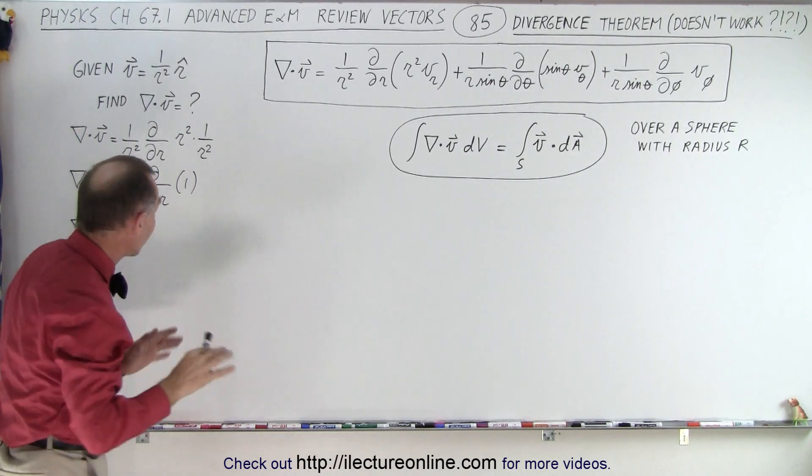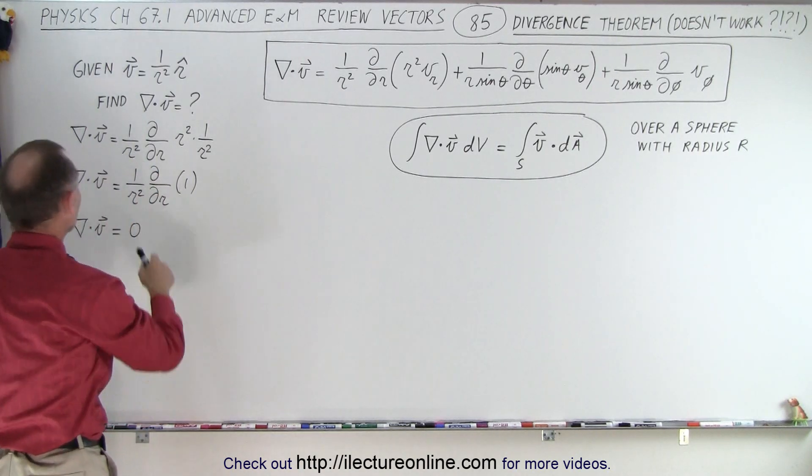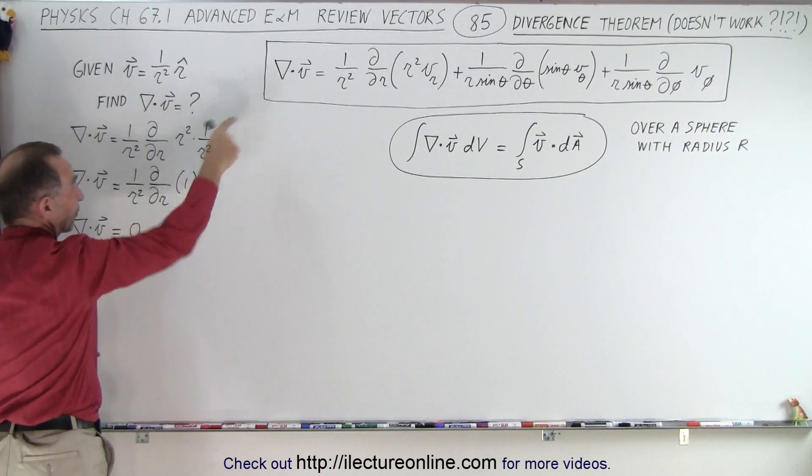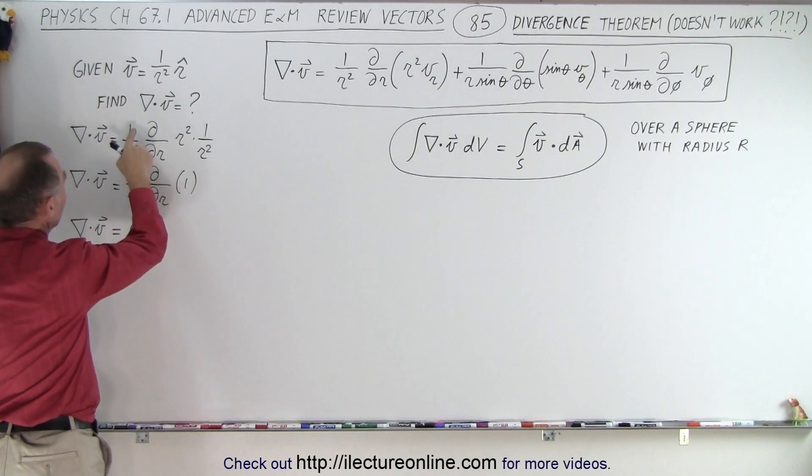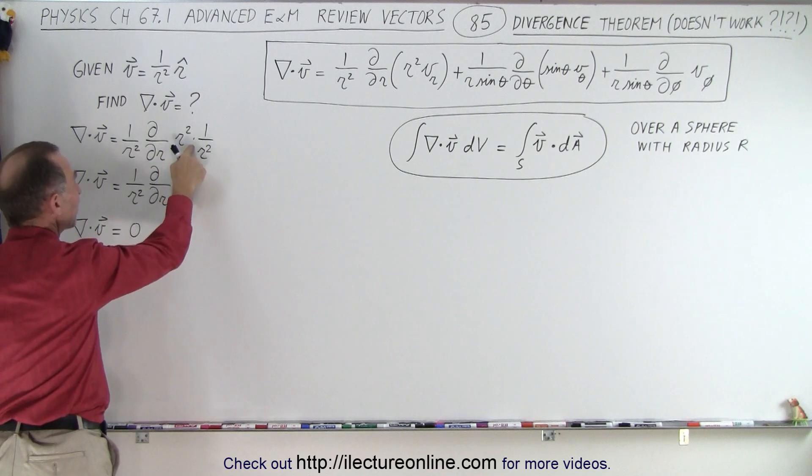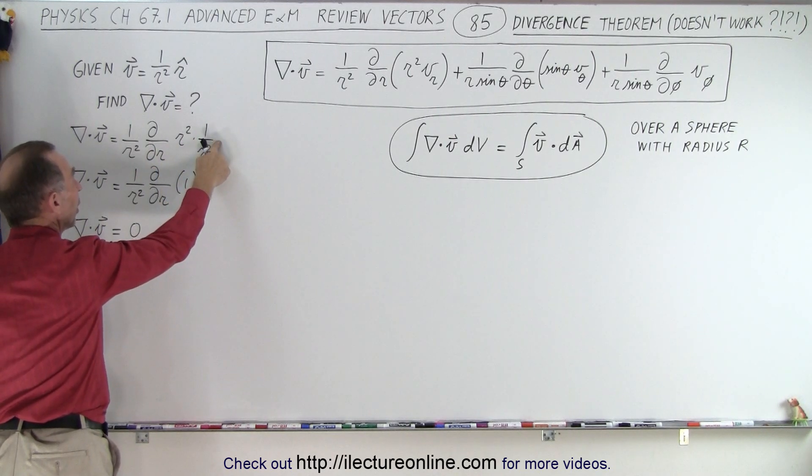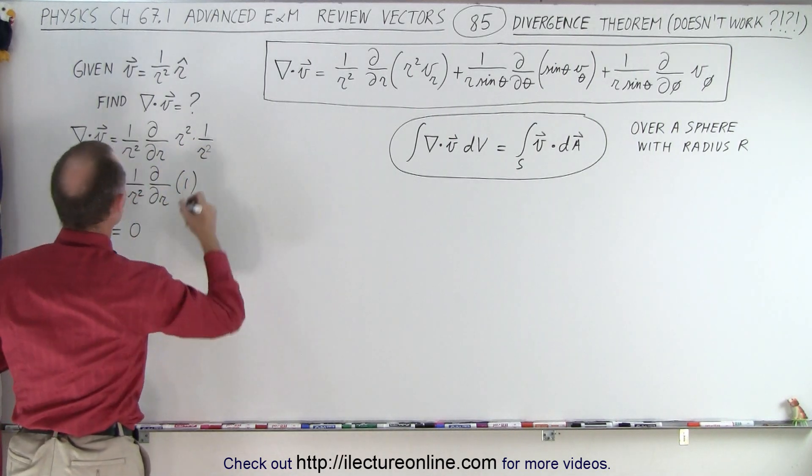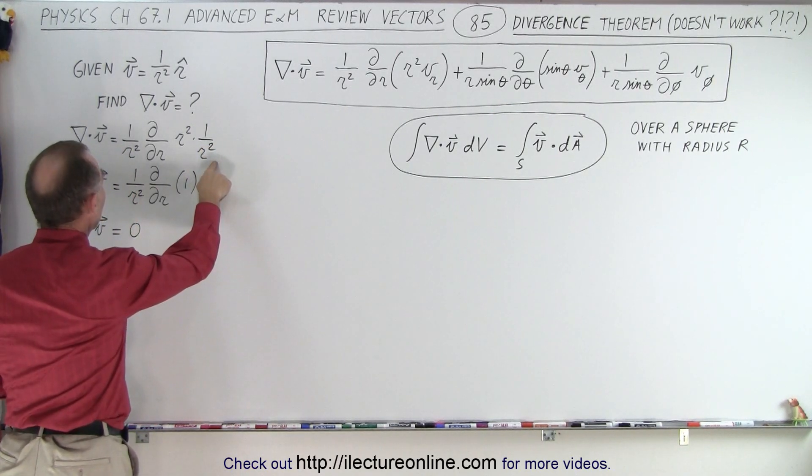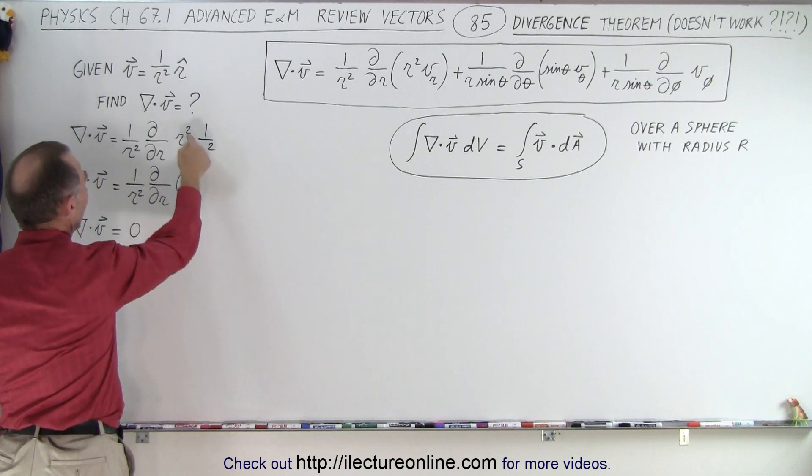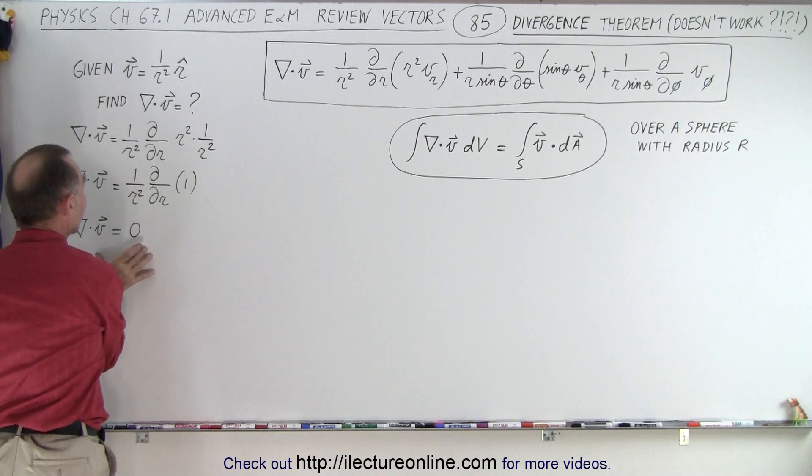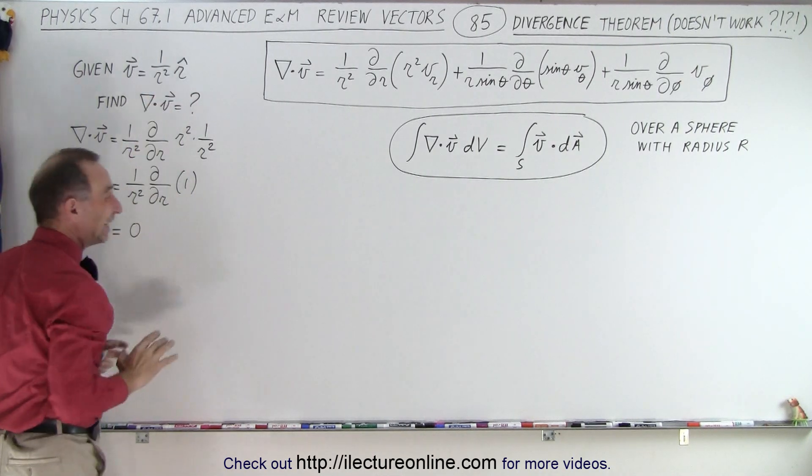What happens when we first take the divergence of that? The divergence, since we only have an r component, we only have to worry about the first part. It's equal to 1 over r squared times the partial derivative with respect to r of r squared times the r component. The r component is 1 over r squared. Notice that r squared over r squared is equal to 1, you take the partial derivative of that, you get 0. So the divergence of this particular function is equal to 0.